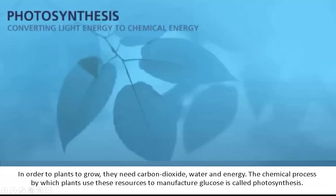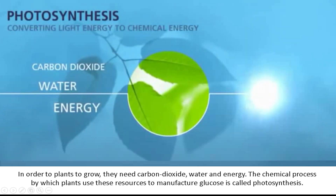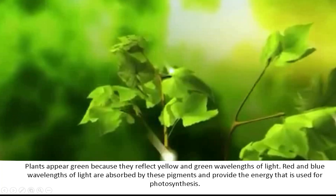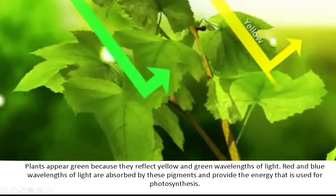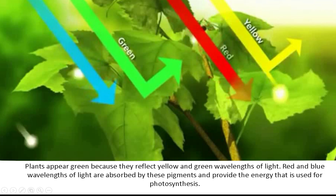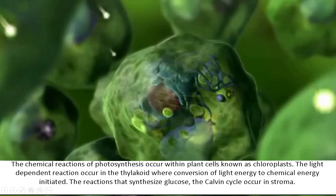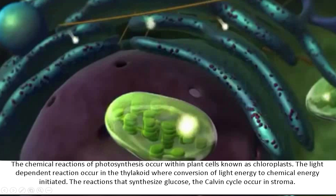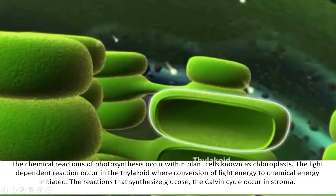In order for plants to grow, they need carbon dioxide, water, and energy. The chemical process by which plants use these resources to manufacture glucose is called photosynthesis. Plants appear green because they reflect yellow and green wavelengths of light. Red and blue wavelengths are absorbed by pigments and provide energy for photosynthesis. The chemical reactions of photosynthesis occur within chloroplasts. The light-dependent reaction occurs in the thylakoid where conversion of light energy to chemical energy is initiated. The reactions that synthesize glucose — the Calvin cycle — occur in the stroma.